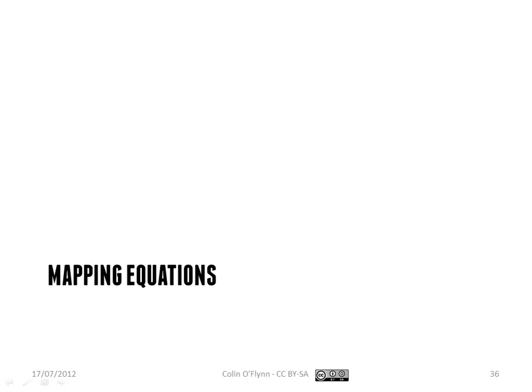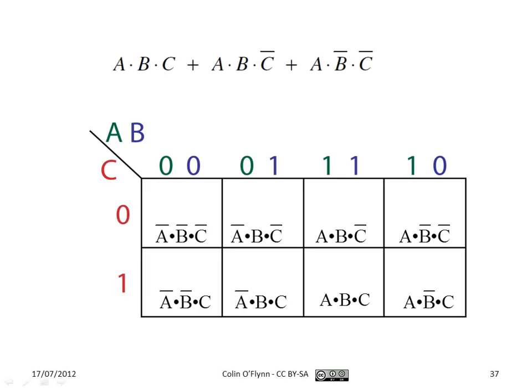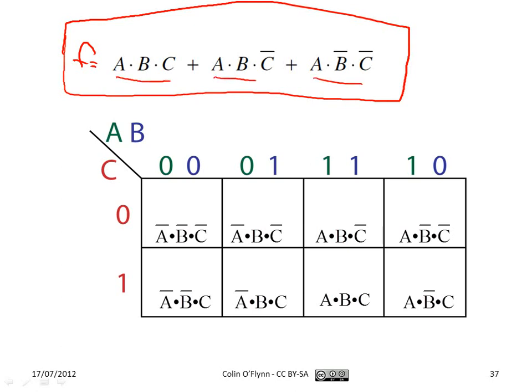Yesterday we extended K-maps and talked about mapping equations and not just truth tables. When we've drawn out the K-map, we can see how we have these various terms. It may be that we directly have a formula that it's extremely obvious how we map this.